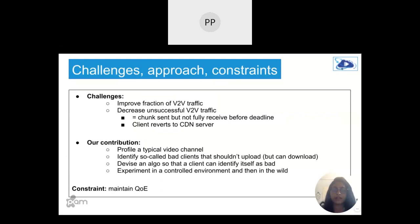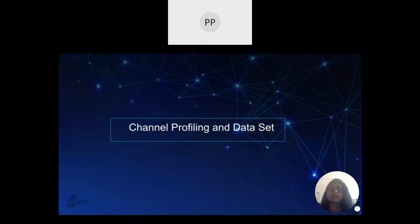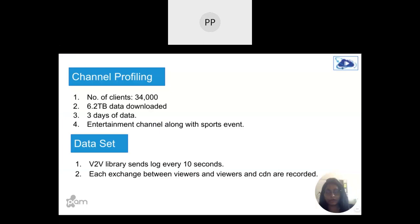In this paper, we profiled a typical video channel, identified bad clients that shouldn't be uploading chunks to viewers, and devised an algorithm to allow clients to identify bad viewers. We conducted experiments in both controlled and wild settings. A main constraint was to maintain quality of experience for viewers. We discuss channel profiling, the dataset, and client profiling.